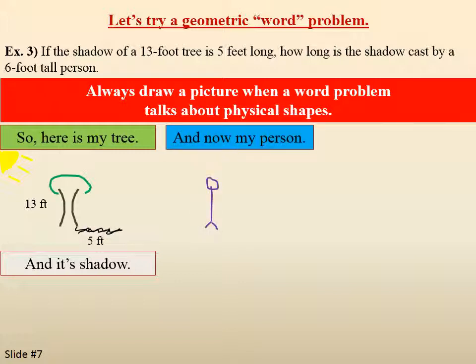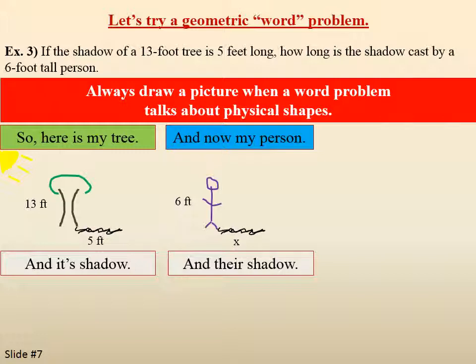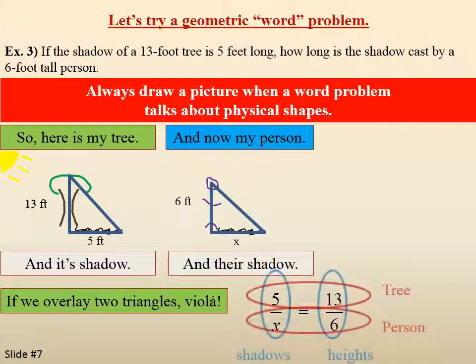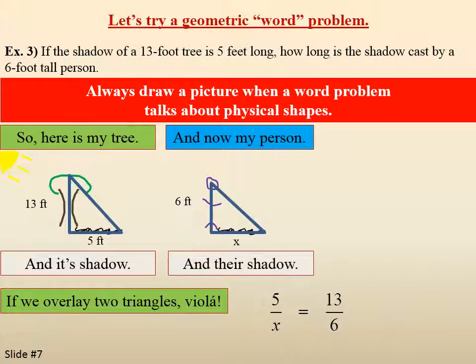Now my person, labeled as six feet tall, and their shadow — which I don't know — so I put an X. If we overlay the two triangles, and set up the proportion: five over X equals thirteen over six. Notice that the shadows are the first fraction and the heights are the second fraction. The numerators relate to the tree and the denominators relate to the person, so everything is related horizontally and vertically.